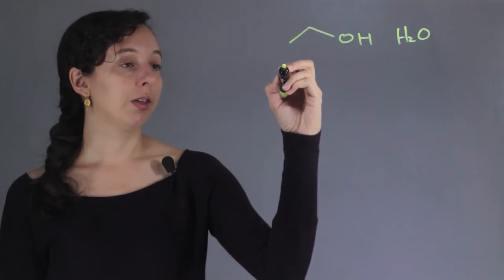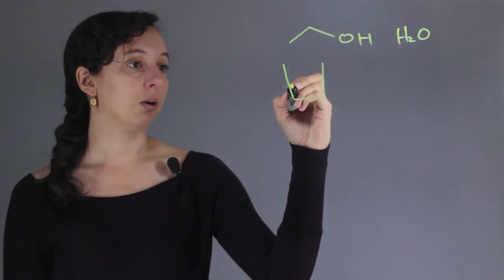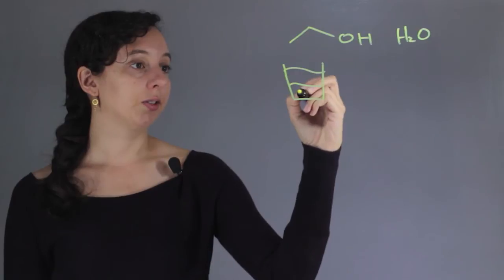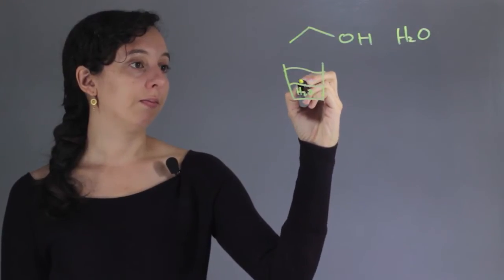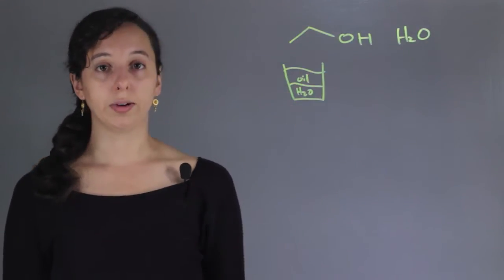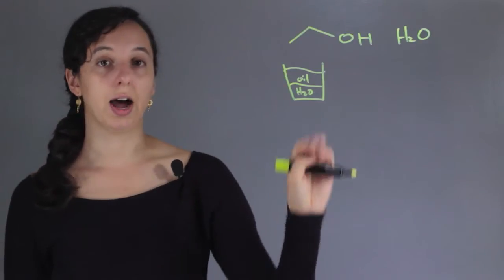So just as an example, if you have two layers of water and oil, they'll always stay like this. Water and oil are not miscible.